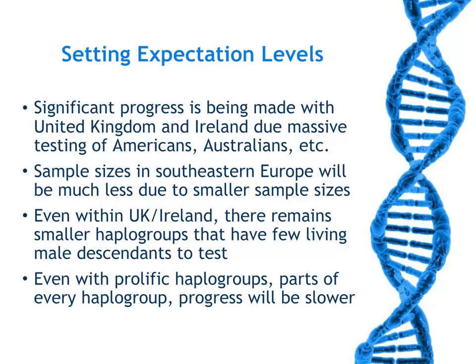You have to set expectations of the charting tools. For projects dominated by United Kingdom and Ireland, there is massive testing being done by American and other colonial descendants. The sample sizes in southeastern Europe will just not be as large, making charting more difficult. Even within UK and Ireland, there remain smaller haplogroups with very few living male descendants to test. Even within the prolific haplogroups, part of every haplogroup will have much slower progress because it is less prolific or has not been tested as much.